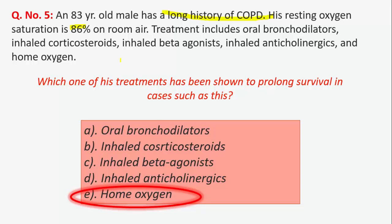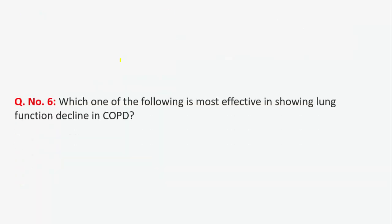Inhaled beta adrenergic agonists and anticholinergic agents, either alone or in combination, provide symptomatic relief but have nothing to do with prolongation of survival. Theophylline can be used for symptoms inadequately relieved by bronchodilators. Inhaled corticosteroids do not appear to alter the rate of decline in lung function in COPD, though some evidence shows they alleviate symptoms and reduce exacerbations. Pulmonary rehab improves quality of life and reduces hospitalization, but home oxygen has the direct survival effect.